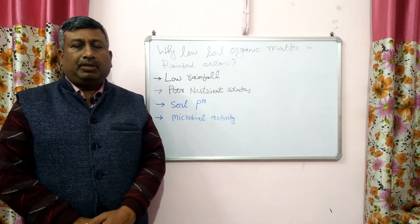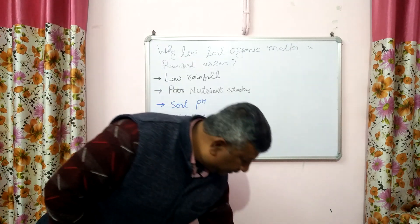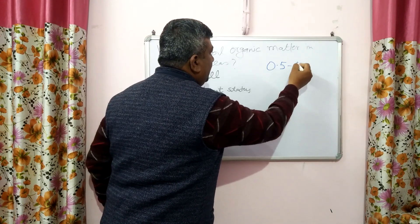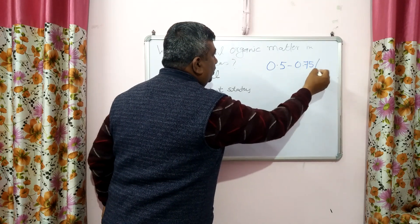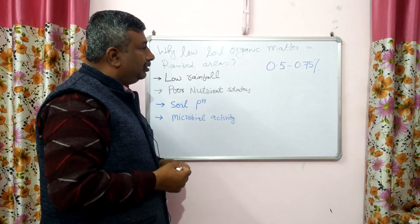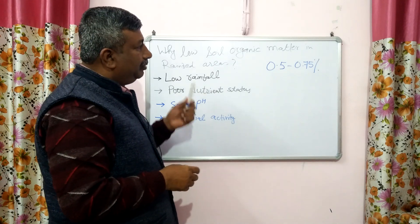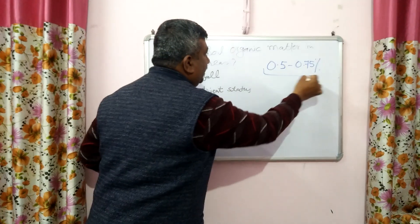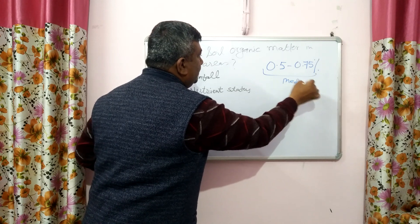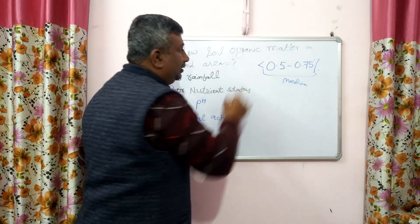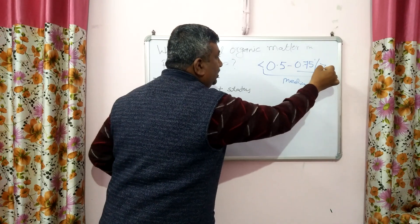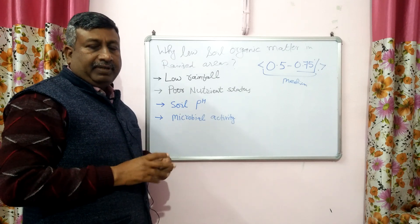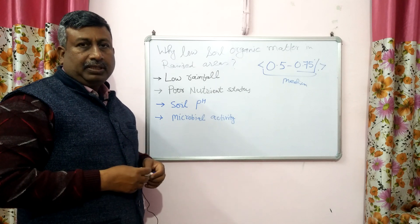In general, we categorize the organic matter content as medium in the range of 0.5 to 0.75 percent. If in any soil, organic carbon content is 0.5 to 0.75 percent, then soil is categorized as medium in organic carbon. If it is less than 0.5 percent, then it is low. And if it is more than 0.75 percent, then it is termed as high in organic carbon. But in the rain-fed area, organic carbon content as well as organic matter content is low.